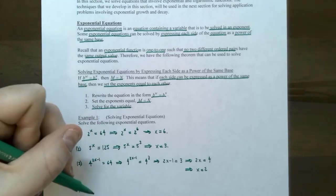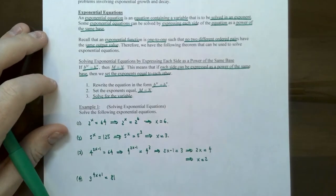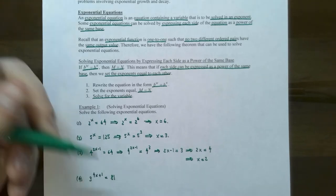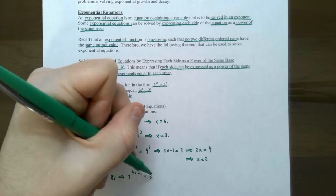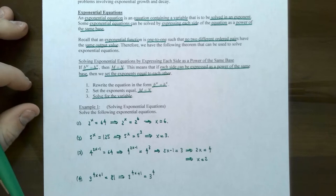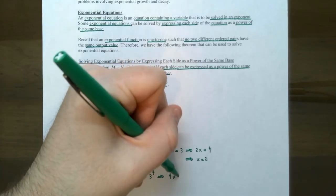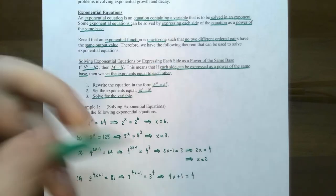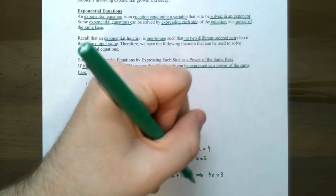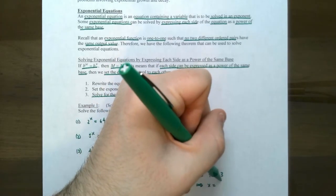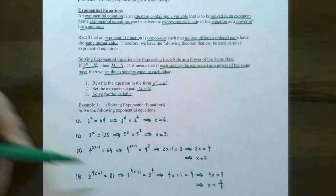Number four: three to the four x plus one equals 81. The left side is base three, and 81 is three to the fourth power — three times three times three times three. Using the one-to-one property, four x plus one must equal four. Subtracting one from both sides gives four x equals three, so x equals three fourths.